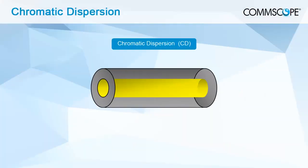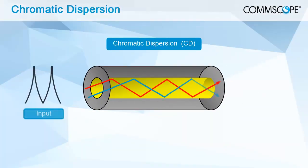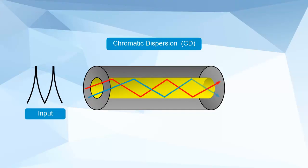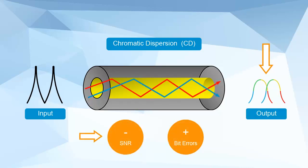Chromatic dispersion (CD) occurs because a light pulse is made up of different wavelengths, each traveling at different speeds down the fiber. These different propagation speeds broaden the light pulse when it arrives at the receiver, reducing the signal-to-noise ratio (SNR) and increasing bit errors.